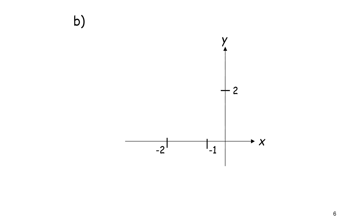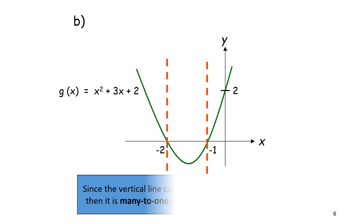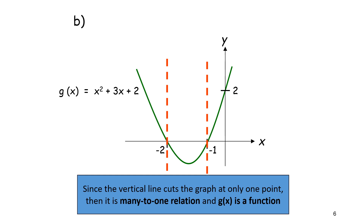For this graph — which is the graph of a quadratic, x squared plus 3x plus 2 — when we do the vertical line test, it cuts at only one point. Therefore, it is called a many-to-one relation, and it is also a function.